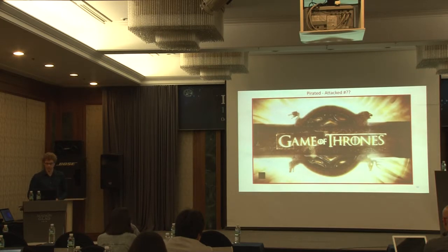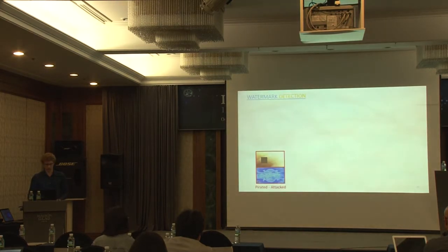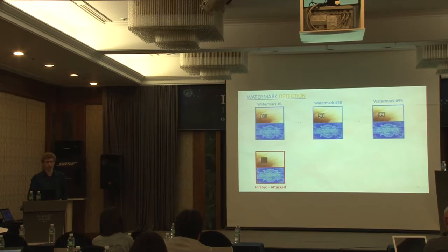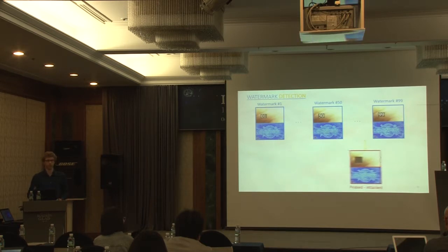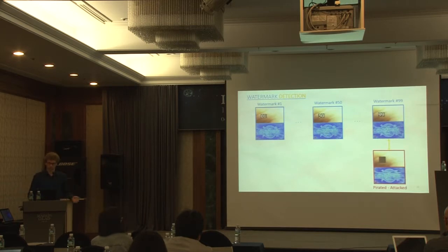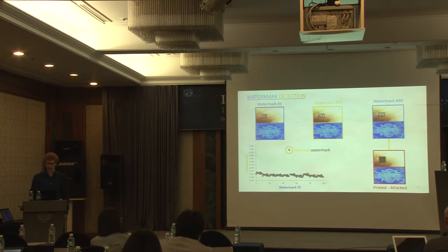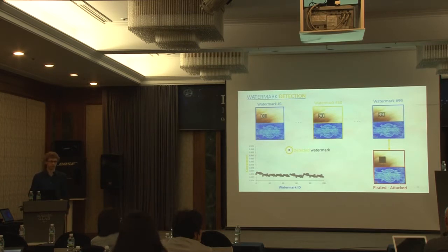Let's say one of those videos was leaked on the Pirate Bay. We download it and see that the visible watermark is covered — in this case, by a black box. How do we know who leaked the video? It's very simple. We have this pirated detected video, and we have, say, 100 watermark videos where we know who each was distributed to. We calculate the correlation between the detected video and watermarks 1, 2, 3, and so on for all 100. We plot the correlation values in a graph and see that one value is clearly higher than all others. That is the detected watermark — the person who received watermark number 50 is the one who leaked the episode, even though as a human we could not identify it because there was a black box over it.